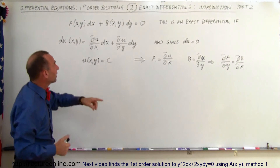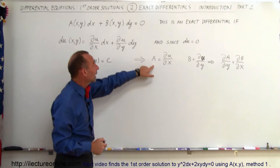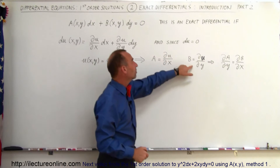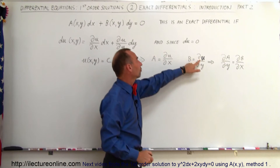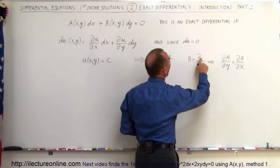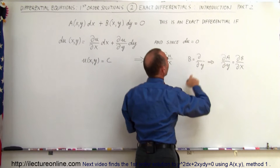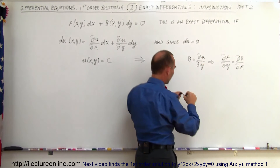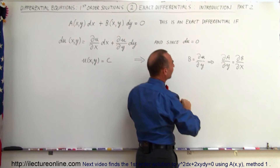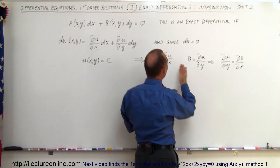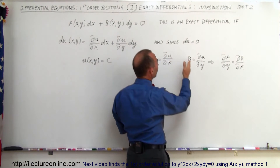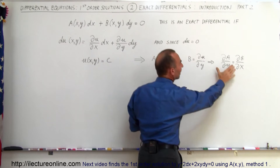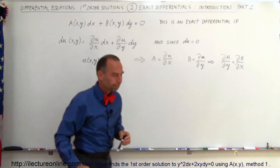So a is equal to the partial of u with respect to x, and b is equal to the partial of u with respect to y. Therefore, if we then take the partial of a with respect to y and the partial of b with respect to x, they must be equal to one another.